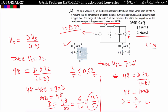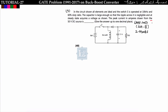For lower supply voltage d is larger, and for higher supply voltage d is smaller — option A is correct. This was asked in GATE 2017 Set 1 for 2 marks. Now the last problem, GATE 2017 Set 2 (2 marks): switching frequency and duty ratio d = 0.6 are given. The capacitor is large enough so ripple is negligible. Find the peak current drawn from the 50 V DC source.